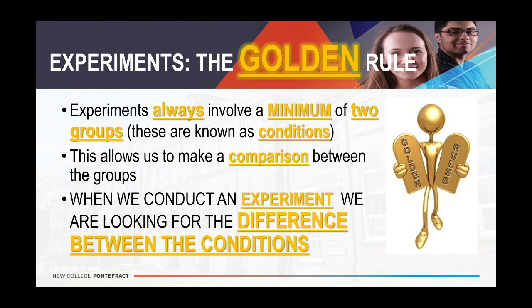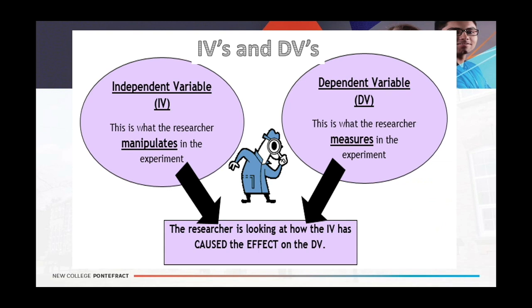The point is that you always need two groups and you are looking for a comparison between them. When we talk about experiments, what we are looking for is a difference between the conditions — how one group of participants differs from a second group depending on what we have manipulated in our research. Always remember: the golden rule involves a minimum of two conditions, two groups of people, and we're looking for a difference. Remember that's only a minimum — there could be 10, 12, or 15 groups, but you always need at least one experimental group and one control group.